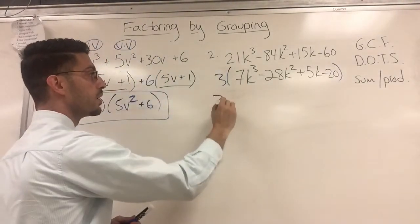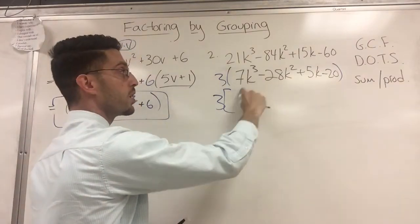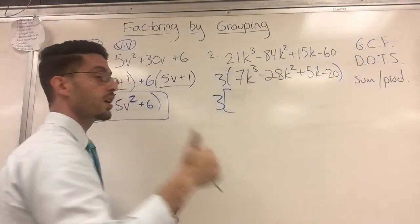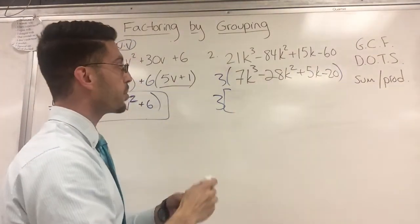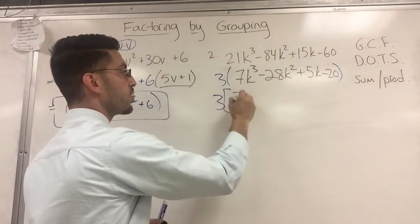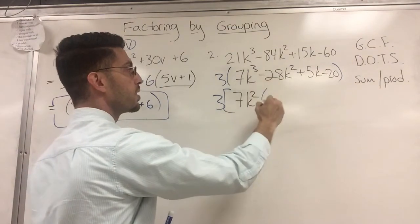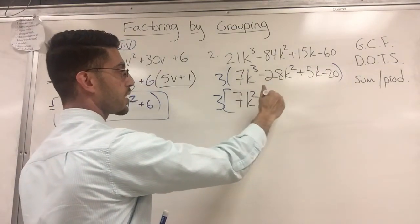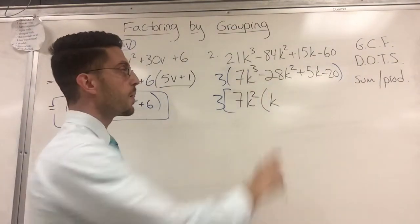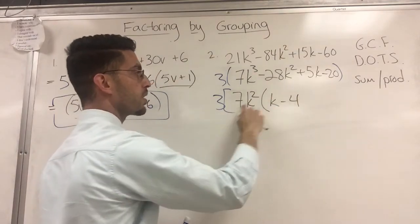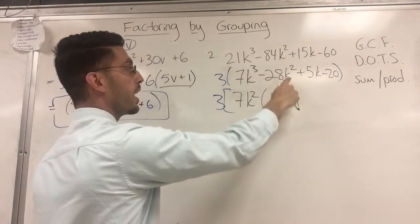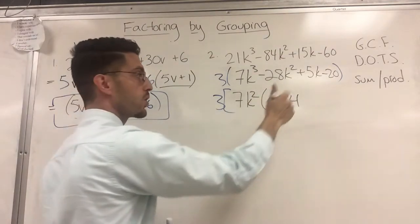So I'm going to look at just the first two terms. Is there a number that goes into 7 and 28? Yes, that number is 7. Also, K². K² is in both terms. What's left? Let's see here. There's a K, just a K, minus 4, because 7 times 4 is 28. And the K² got factored out, so I'm done there.